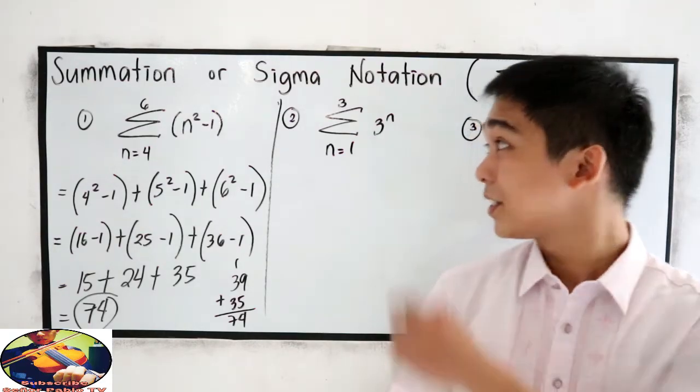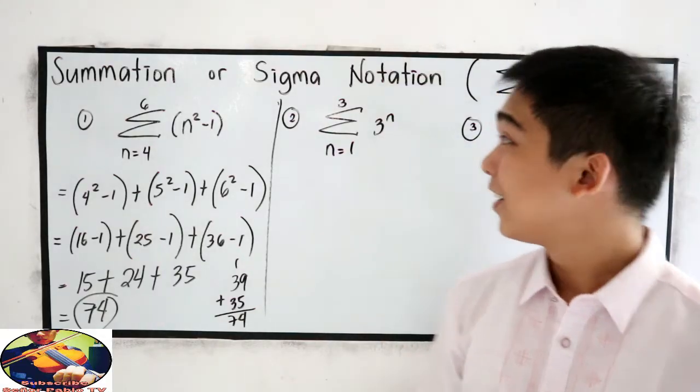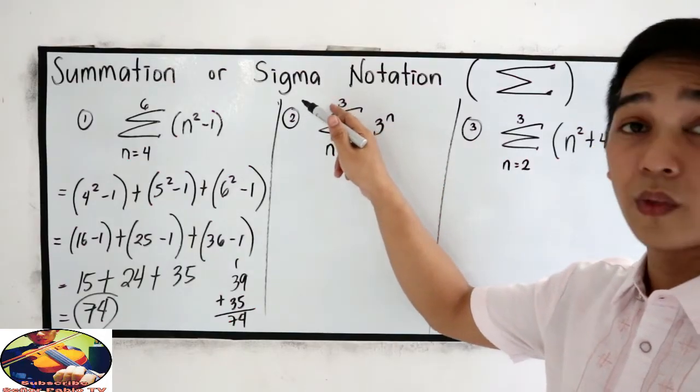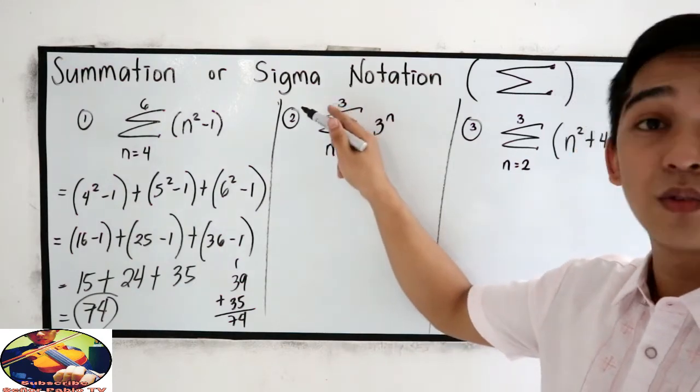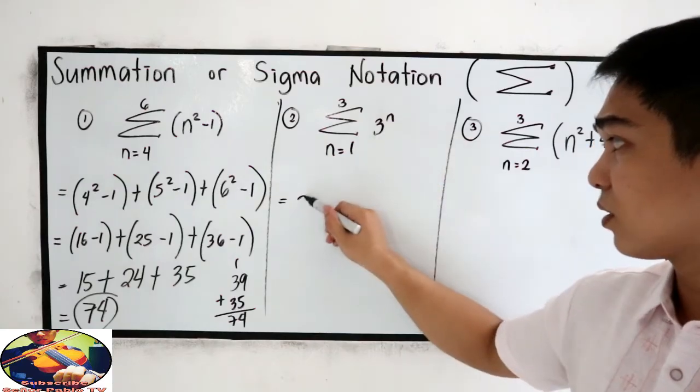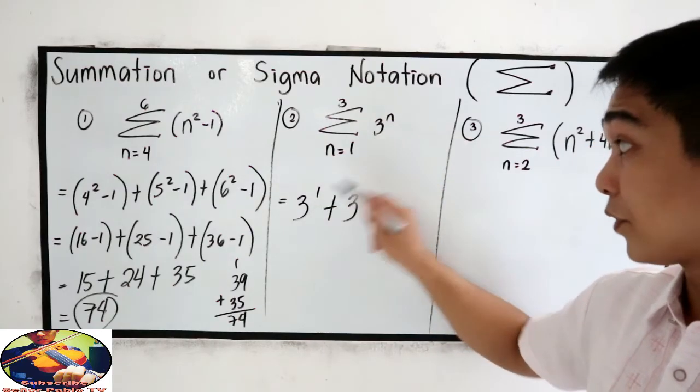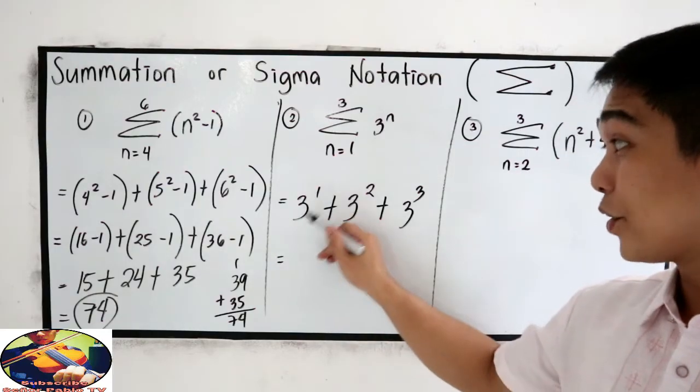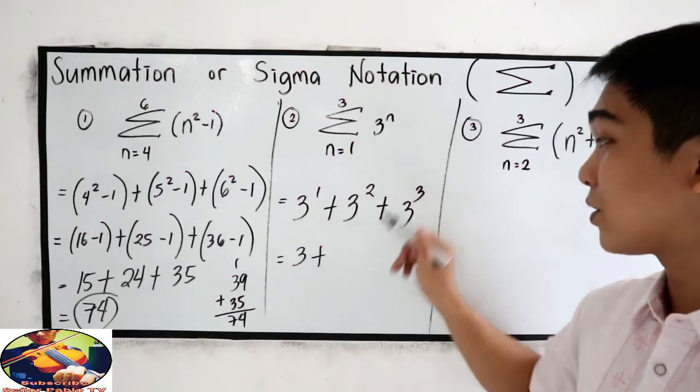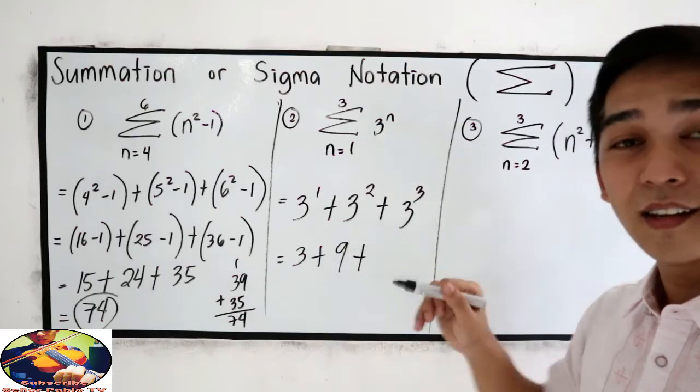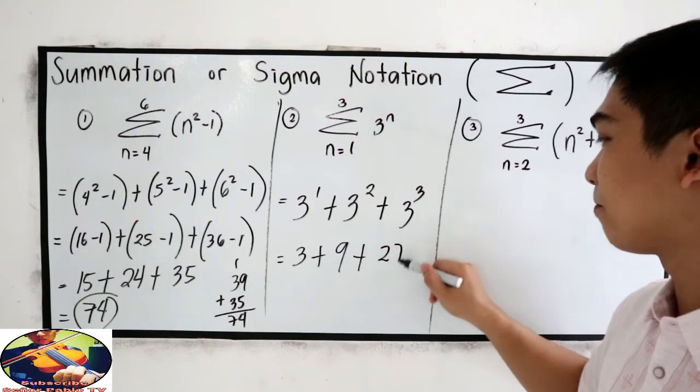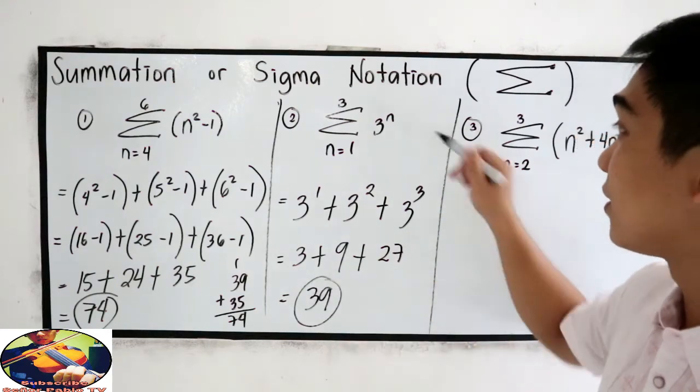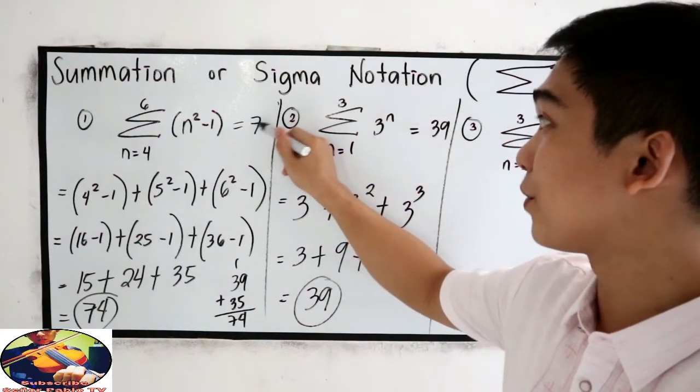Now let's check your number 2 exercises. Summation of 3 raised to n, goes from 1 to 3. So we're going to start at 1 and end at 3. So just change: 3 raised to 1 plus 3 raised to 2, plus 3 raised to 3. 3 raised to 1 is 3, plus 3 raised to 2 is 9, plus 3 raised to 3 is 27. 3 plus 27 is 30, plus 9 is 39.